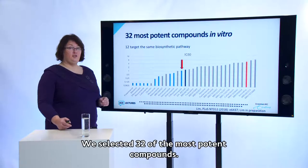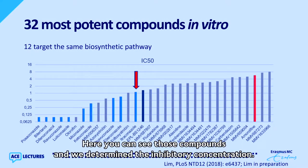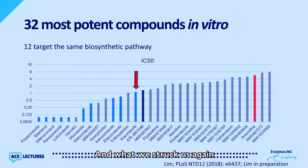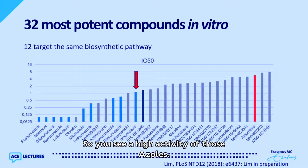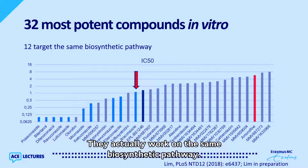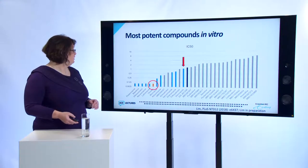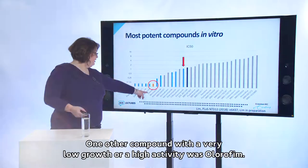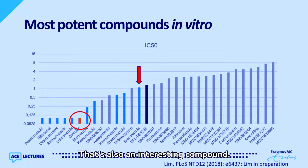We selected the 32 most potent compounds and determined their inhibitory concentrations. The azoles again showed very high activity. Two compounds — a red bar and a dark blue bar — work on the same biosynthetic pathway, making it a very potent target. One compound with very high activity was olorafim, which is an interesting candidate.